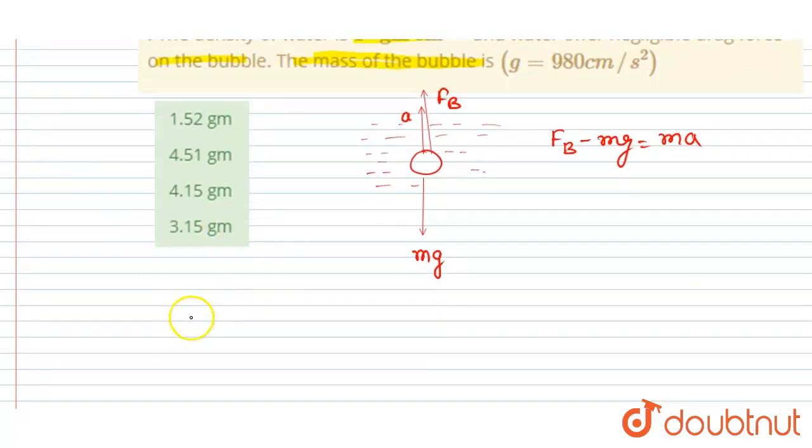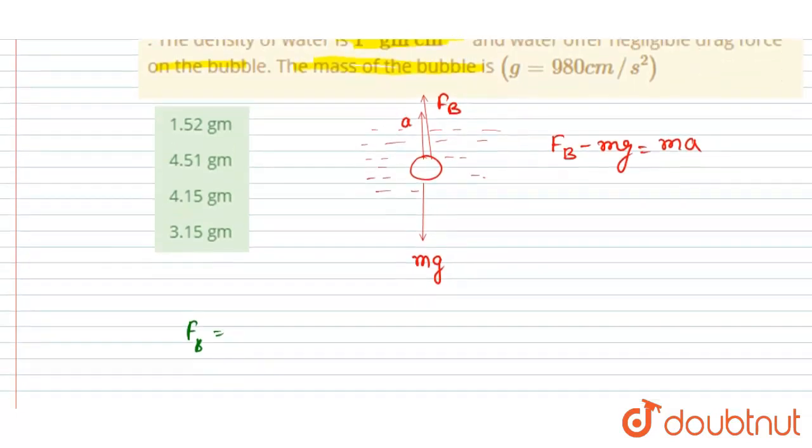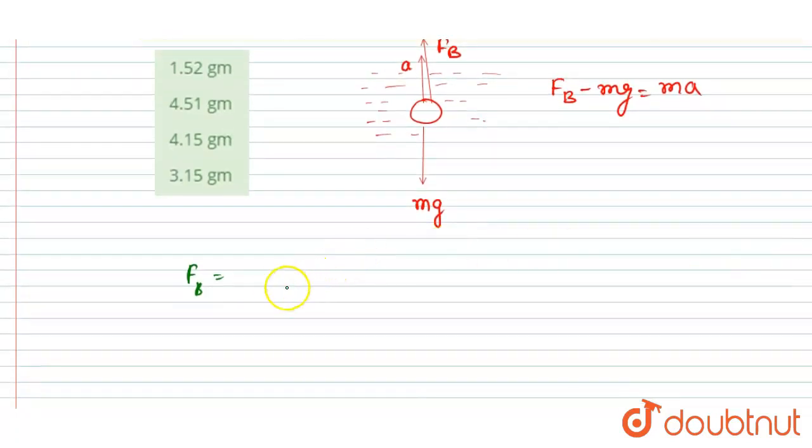Very simple. Now you can just find out the buoyant force on the bubble. So if you see here, the bubble is completely submerged, so the volume submerged will be equal to the volume of the bubble and it is given that the radius of the bubble is 1 cm, right?